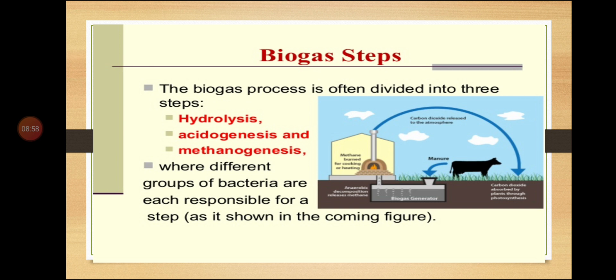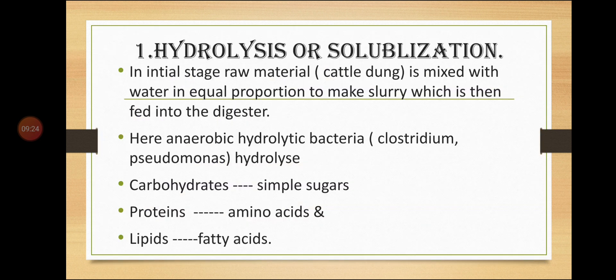Anaerobic digestion involves three steps: hydrolysis, acidogenesis, and methanogenesis, where different groups of bacteria are responsible for each step. The first step is hydrolysis, also known as solubilization.